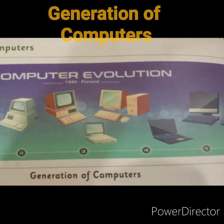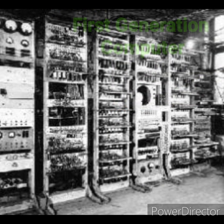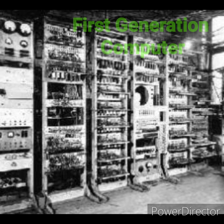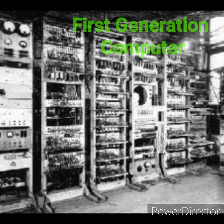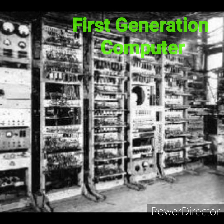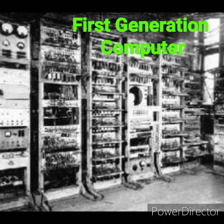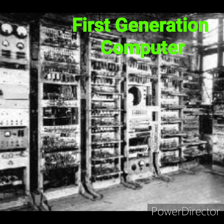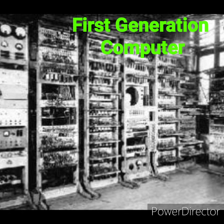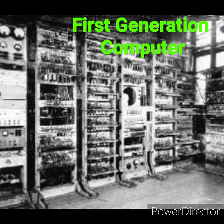First generation computers. Duration: 1940 to 1956. The first generation computers used large vacuum tubes for processing information. They were large in size and very costly. They also consumed a lot of electricity and produced excess heat. They could perform only one task at a time.